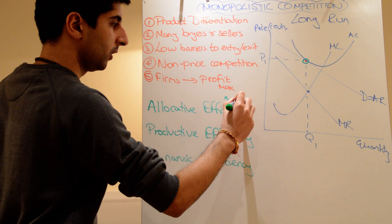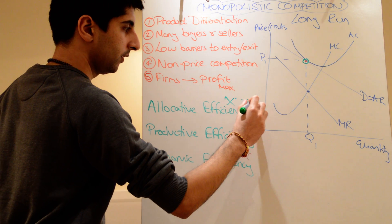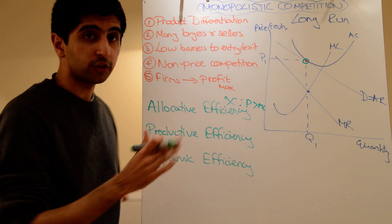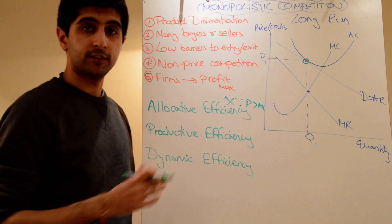So allocative efficiency? No. Because price is greater than marginal cost. So no, there is not allocative efficiency in monopolistic competition.